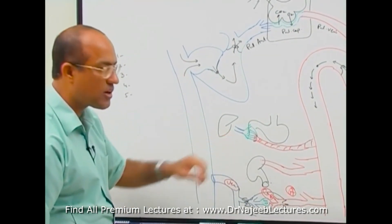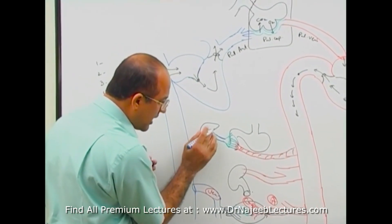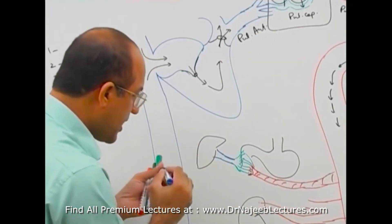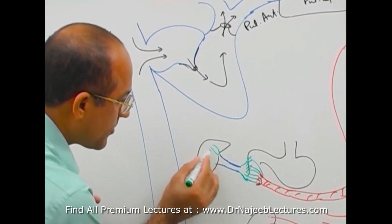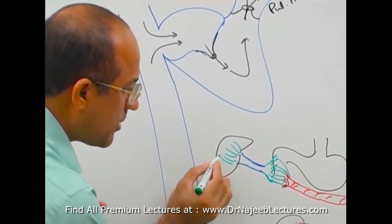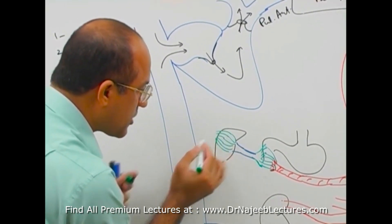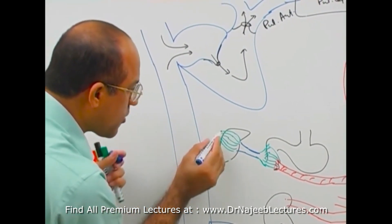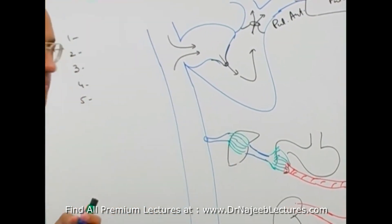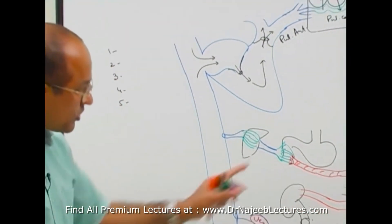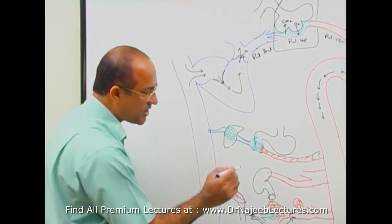But here there is a modification. This vein will go to the liver, and in the liver it will again break down into capillaries. These capillaries will again come together and form another vein, and that vein will drain into the caval system. This is a modified circulatory pattern.